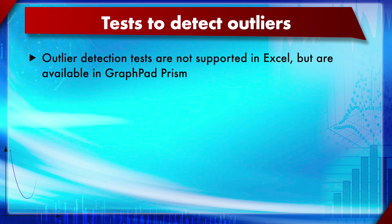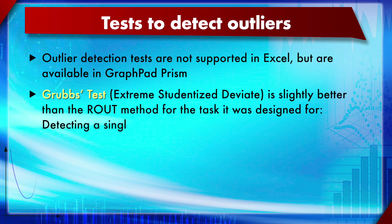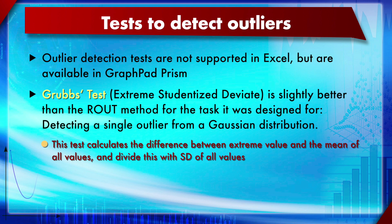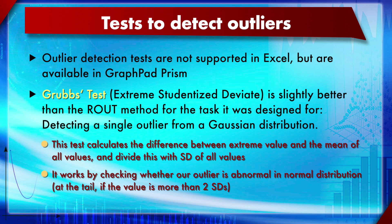Outlier detection tests are not supported in Excel, unfortunately. You have to use paid software like GraphPad Prism or SPSS. Two commonly used outlier tests are the Grubbs test, which can detect only one outlier, and the ROUT method, which can detect more than one outlier. The Grubbs test works by calculating the difference between the extreme value and the mean of all values, then checking whether that value falls within two sigma. The ROUT method is better when you have multiple outliers.